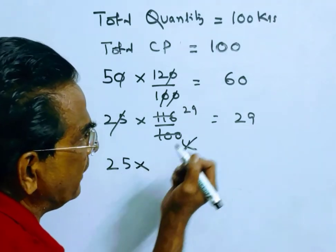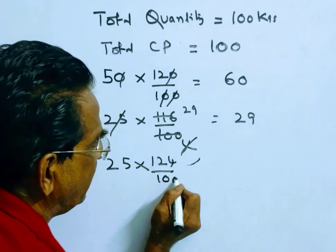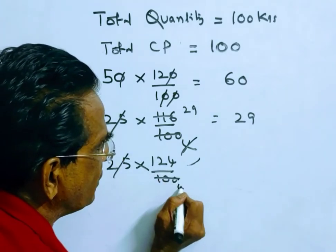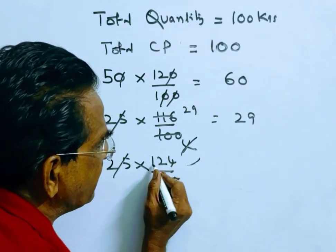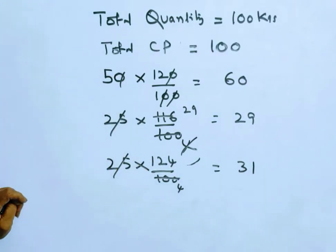This is sold at a profit of 24%. So what is the amount realized? What is the amount realized? 25 becomes 31. Friends, the amount realized is 31.